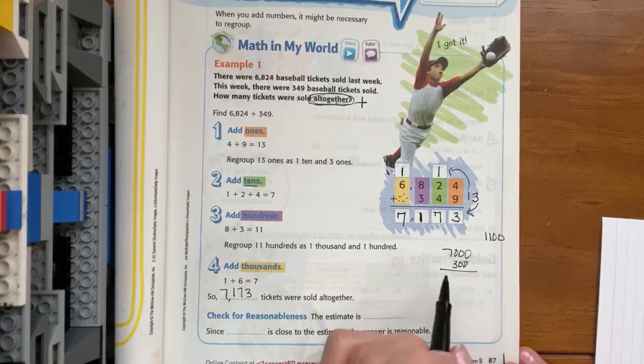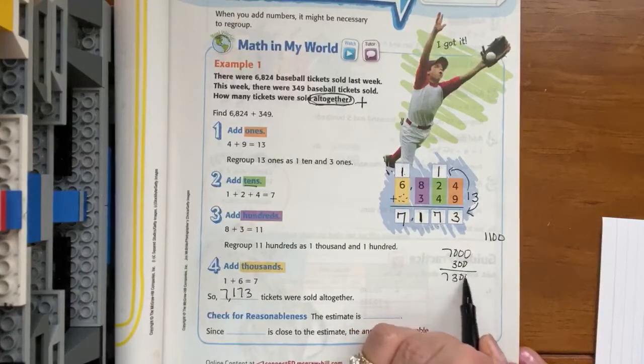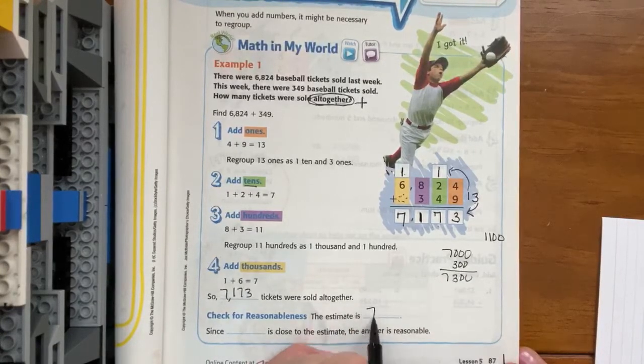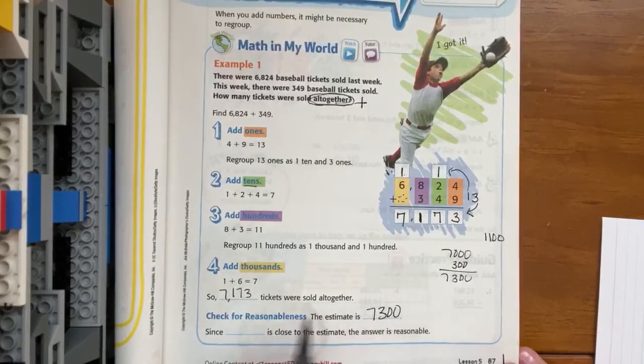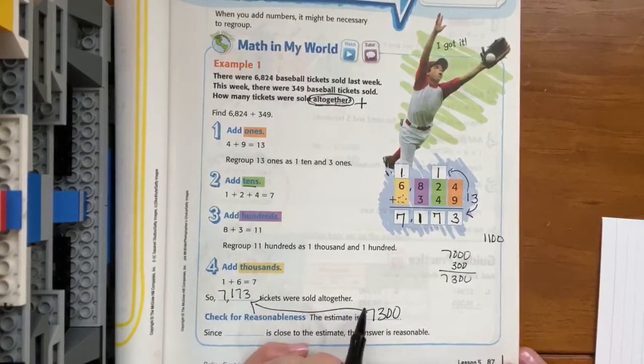So we are at about 7,300. And you can tell by comparing those that we're not far off.